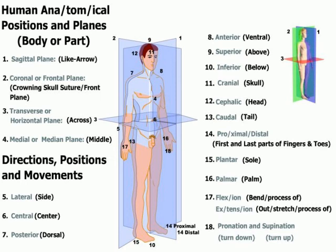Number nine is superior — it means above. Supra also means something that lies above, and occasionally hyper is used in reference to above. Number ten, inferior means below. Hypo and infra also mean below.